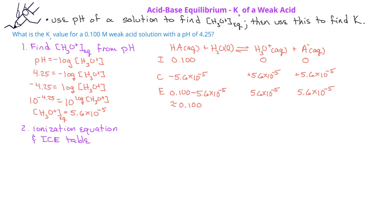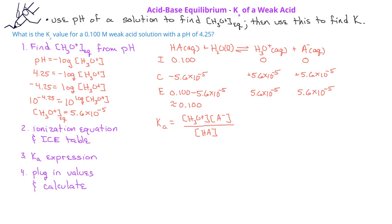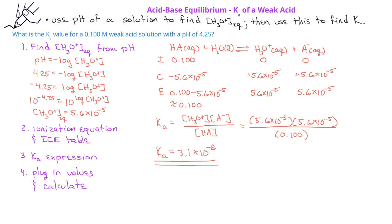We can now write the equilibrium constant expression for a generic weak acid: Ka equals the concentration of the hydronium ion times the concentration of A⁻ divided by the concentration of HA. Plugging in values, we get 5.6 times 10 to the minus 5 times 5.6 times 10 to the minus 5 divided by 0.1. When we calculate this, the Ka for this weak acid is 3.1 times 10 to the minus 8.